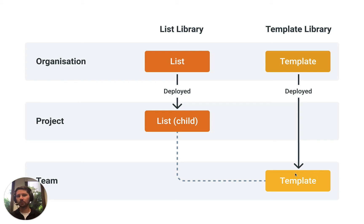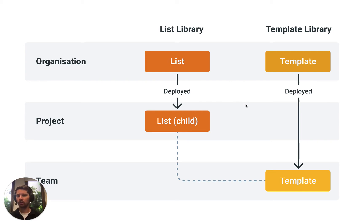We can repeat this process for each project, meaning each project will have its own list of 20, 30, or 40 people. You've got the flexibility to choose what values should appear on each project.